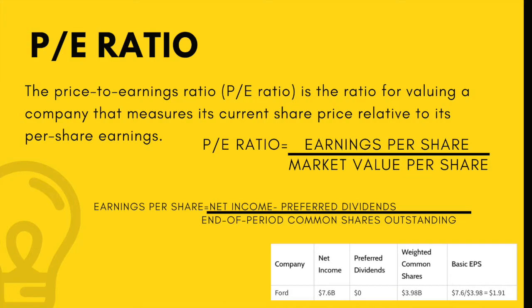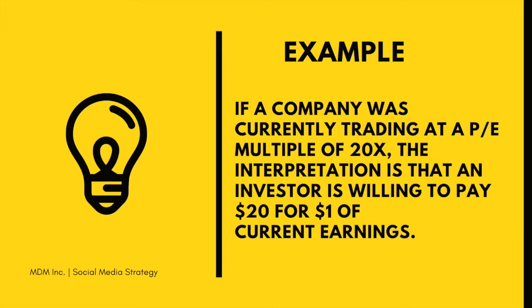For example, let's look at Ford at the end of the 2017 fiscal year. Ford had a net income of $7.6 billion, with preferred dividends of $0 and weighted common shares of $3.98 billion. To find the earnings per share, you take net income over weighted common shares — since there are no preferred dividends — giving an earnings per share of $1.91. So if a company is currently trading at a PE multiple of 20, the interpretation is that an investor is willing to pay $20 for $1 of its current earnings.